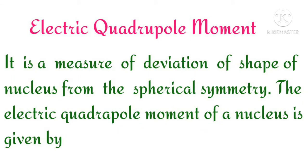Electric quadrupole moment of a nucleus. The shape of the nucleus — specifically, how many deviations from a spherical shape the nucleus has — is described by the electric quadrupole moment.